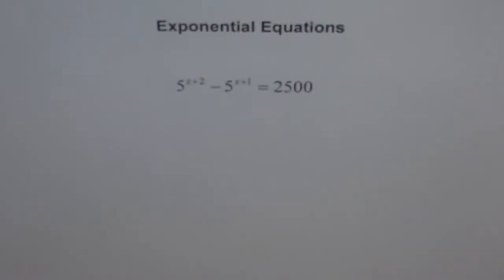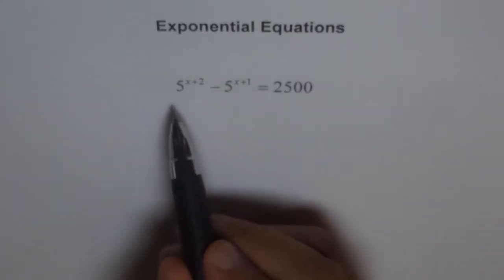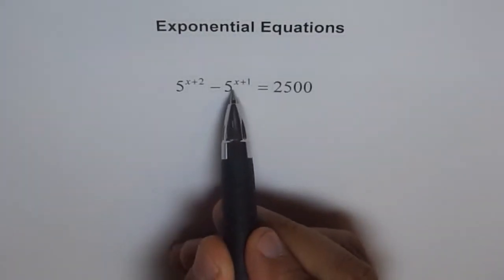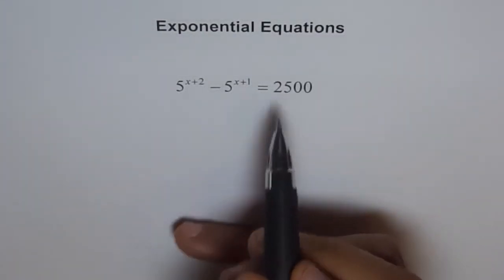Let's try to solve this exponential equation. It is 5 to the power of x plus 2 minus 5 to the power of x plus 1 equals to 2500.